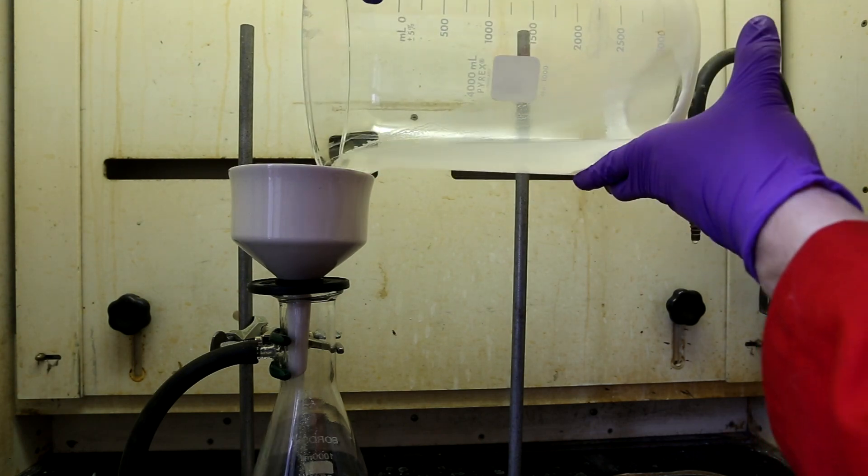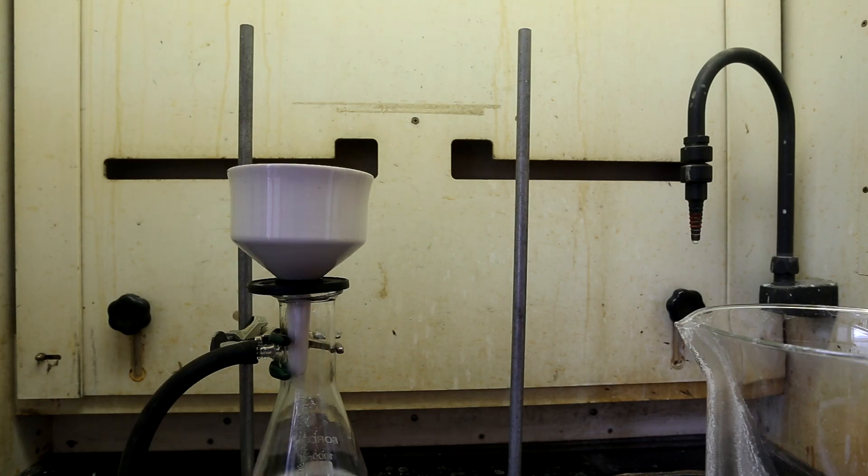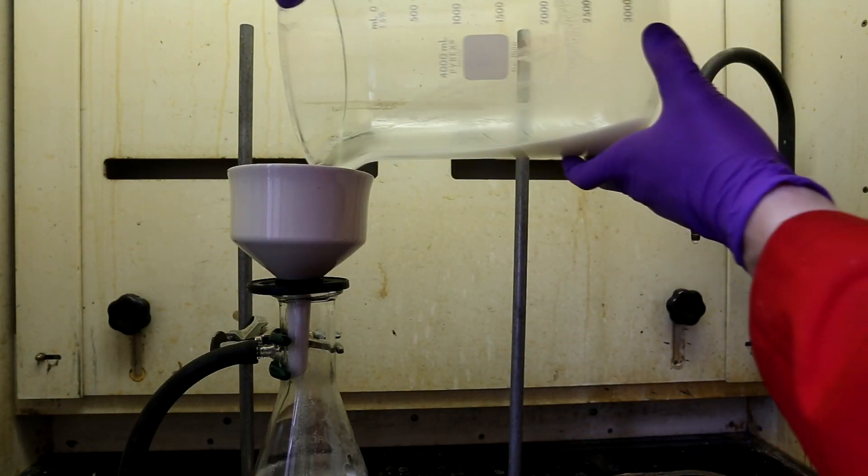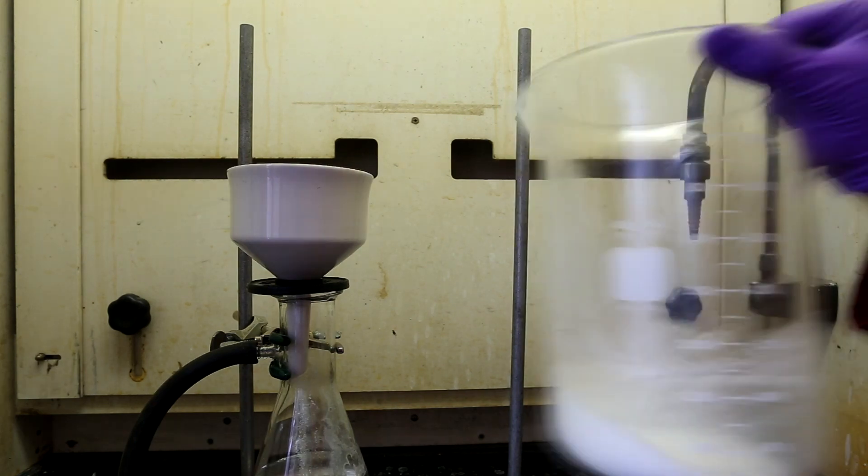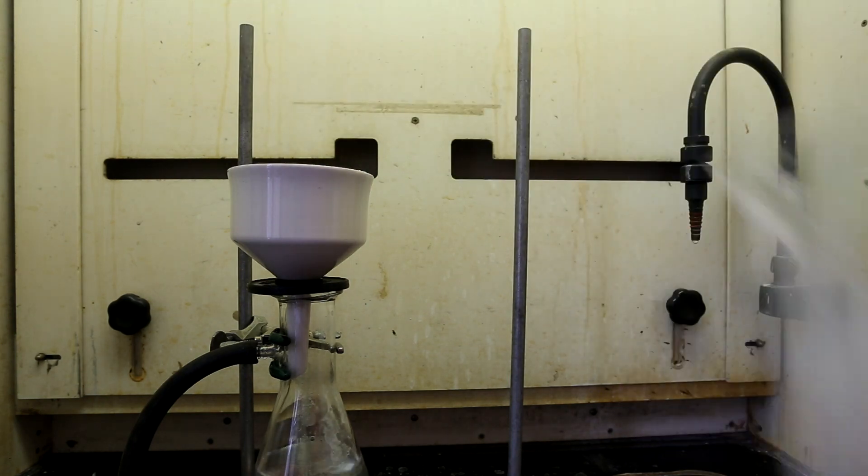Now, all that needs to be done is to evaporate the acetone to recover the acetylsalicylic acid. If you're at home, the best course of action is to transfer the solution to a large open top container and then let it sit in a well-ventilated area to evaporate off all the acetone.